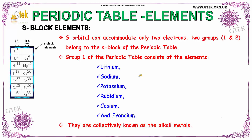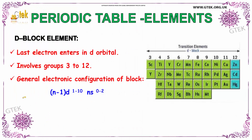The S orbital can accommodate only two electrons and it belongs to the S block of the periodic table. Group 1 of the periodic table consists of the elements lithium, sodium, potassium, rubidium, cesium, and francium — they are collectively known as alkali metals. Hydrogen is not considered among these alkali metals.